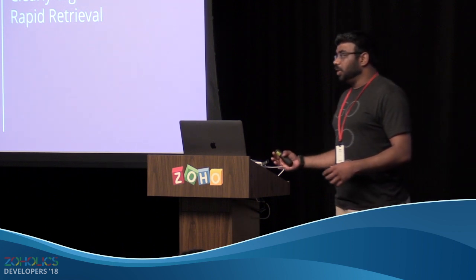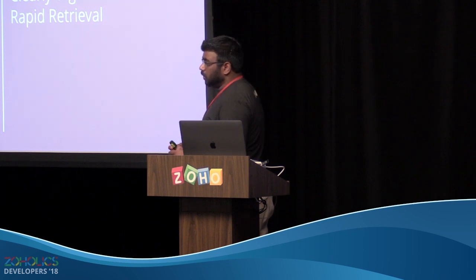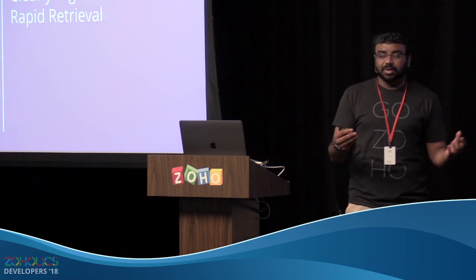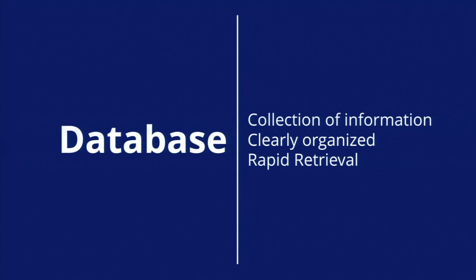Going back to a Creator application in general, there are three main parts: your Creator application is your database as a whole. The first step is collecting information — you have forms, you're importing data, bringing it in from third-party sources via API calls or other methods. Once information comes in through a form, it's organized depending on how well you built that form. For example, before Creator 5 there wasn't a name field, so you might have separate first name and last name fields — which matters if you want to address someone by first name in an email. The most important part is the last step: rapid retrieval, because all the value is in how you visualize the information already inside the system.